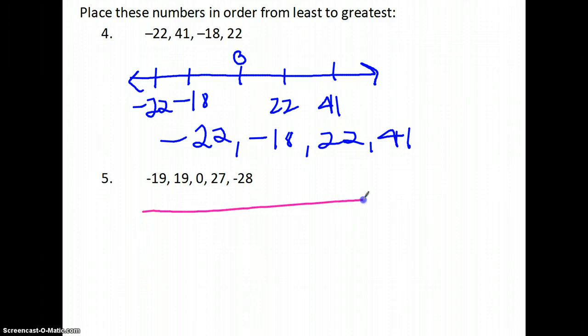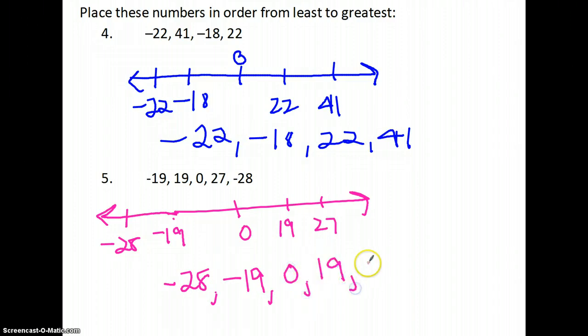Next one, same thing. Draw yourself a number line. This one actually has 0. So 19 is going to be here, -19 is going to be over here, 0, 27, and then -28 is over here. So writing these in order, I would have -28, -19, 0, 19, 27. Notice I'm putting a comma in between all of these to separate the numbers so they don't run together.